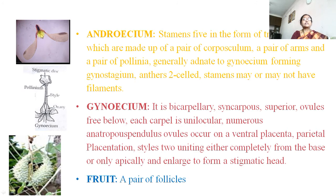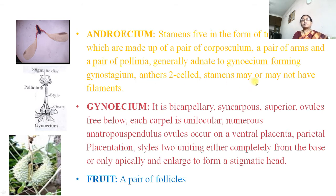The gynoecium is made up of two ovaries, then style, and a pentangular stigma. The androecium is fixed at each angle/corner of the gynoecium or stigma — that is why it is called the gynostegium condition. Pollinia contain pollen grains. Stamens may or may not have filaments; many times they are modified into the translator.